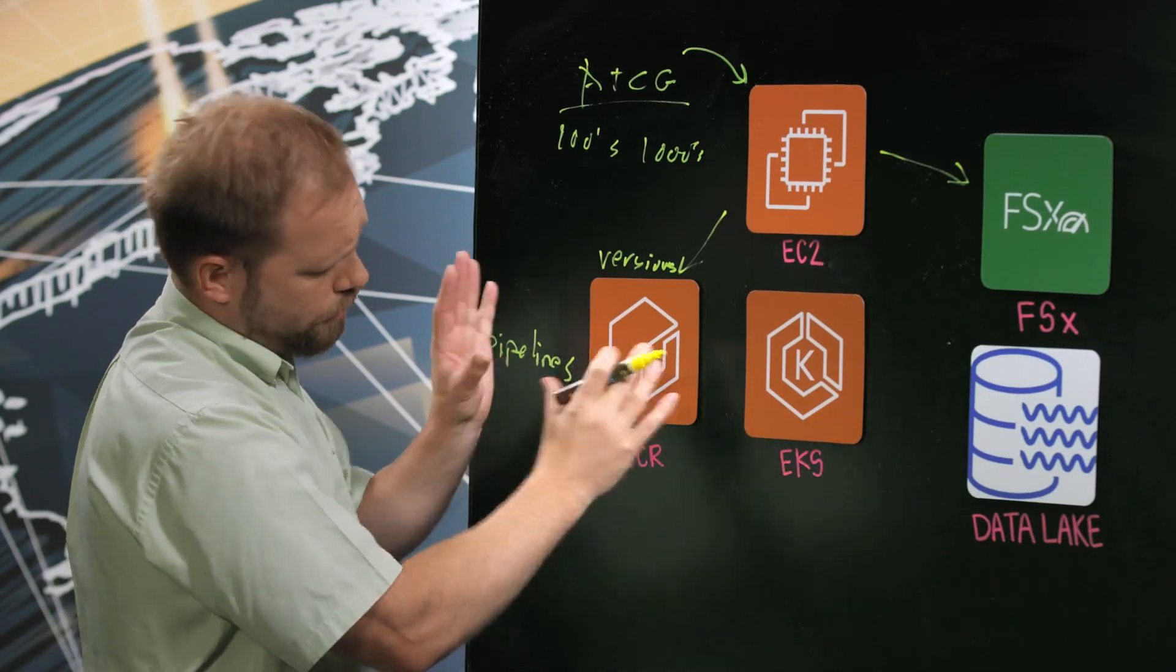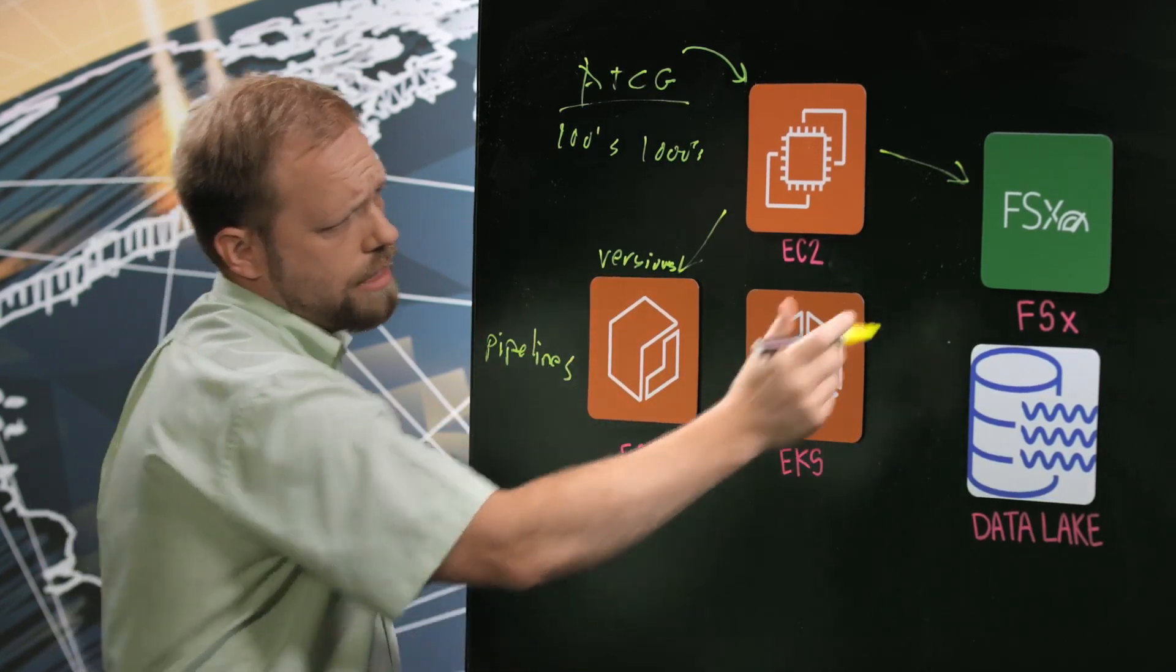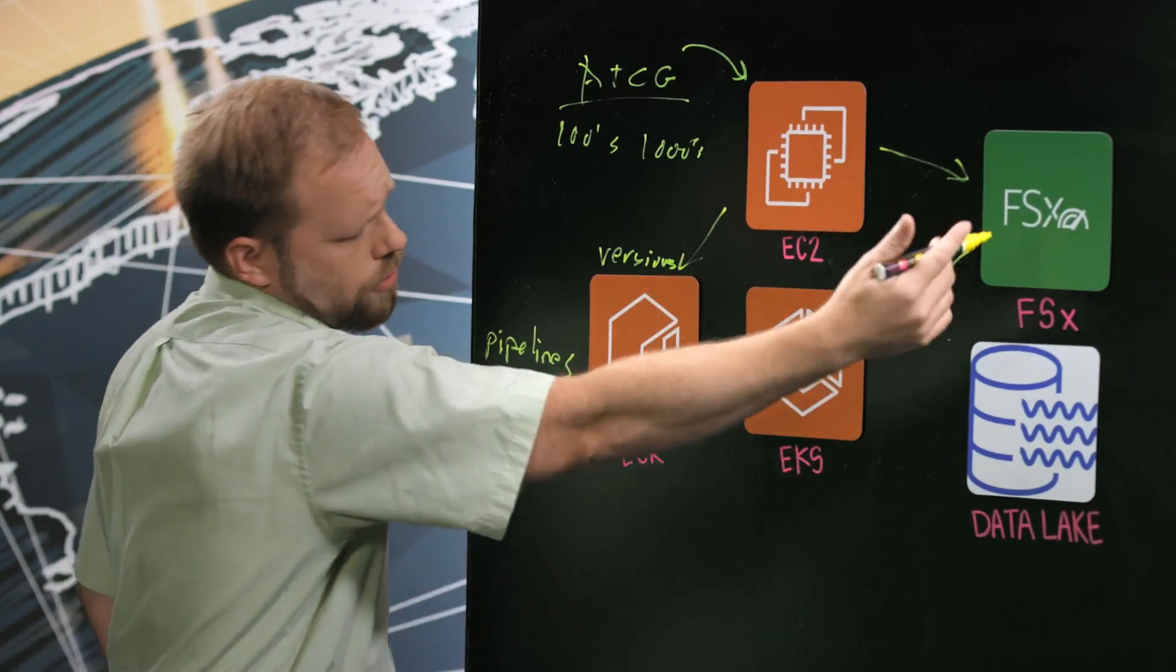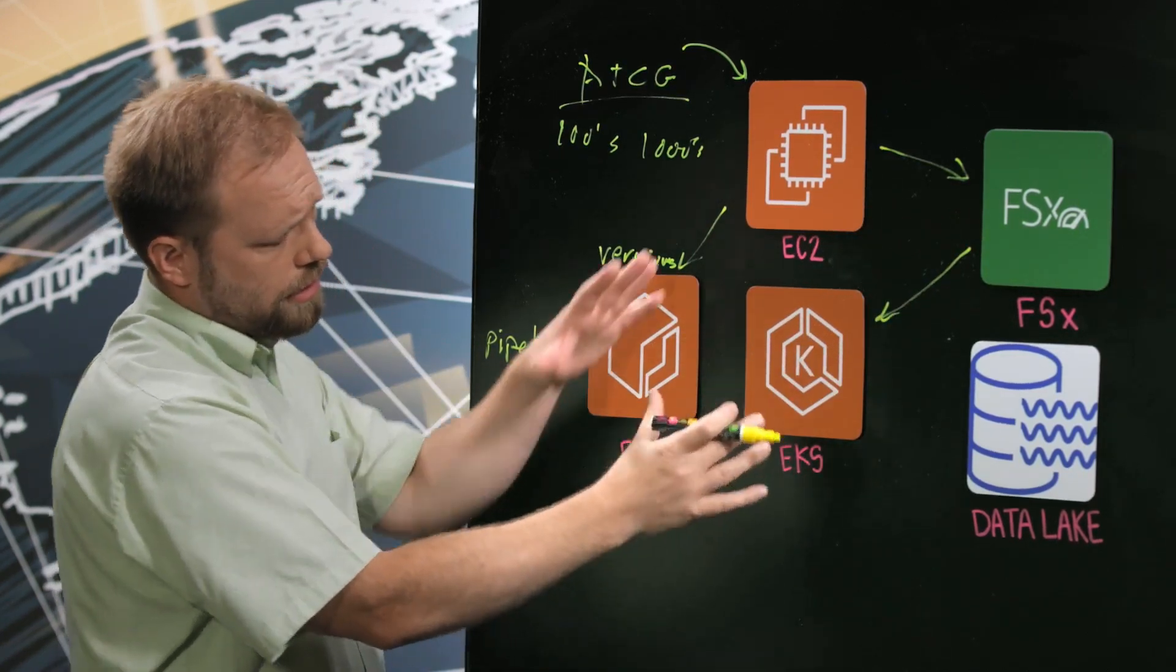Then those are pulled from ECR into EKS. And data that we had ingested earlier in the step is then run on because these are all mounted, FSX is mounted onto the different nodes.